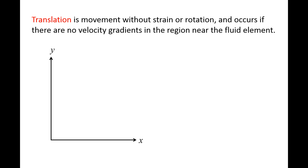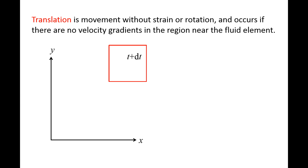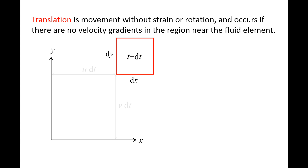Translation is movement without strain or rotation. It occurs if there are no local velocity gradients. At time t, we have a fluid element with sides dx, dy, and dz, where the fluid element extends a distance dz into the screen. The velocity components u and v are the same along the entire perimeter of the fluid element. After a small time dt passes, the fluid element moves to a new location, traveling a distance u·dt in the x-direction and v·dt in the y-direction.